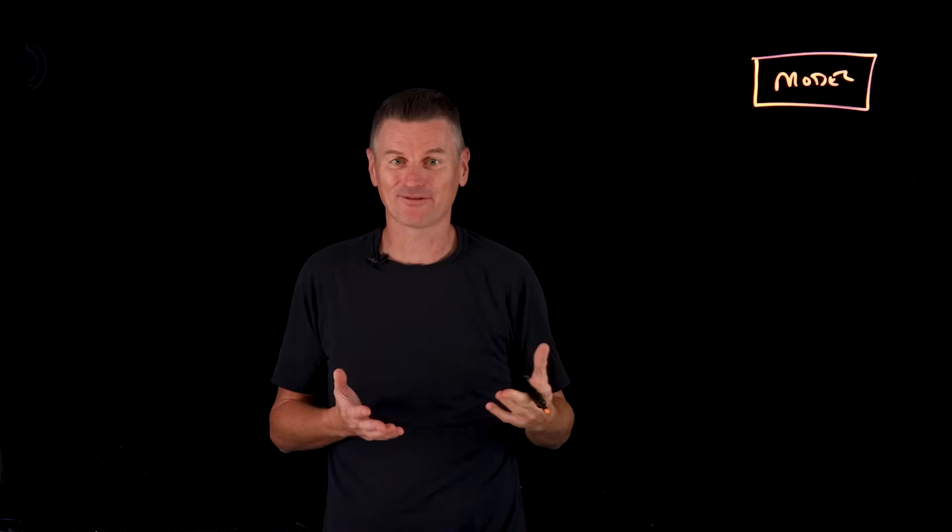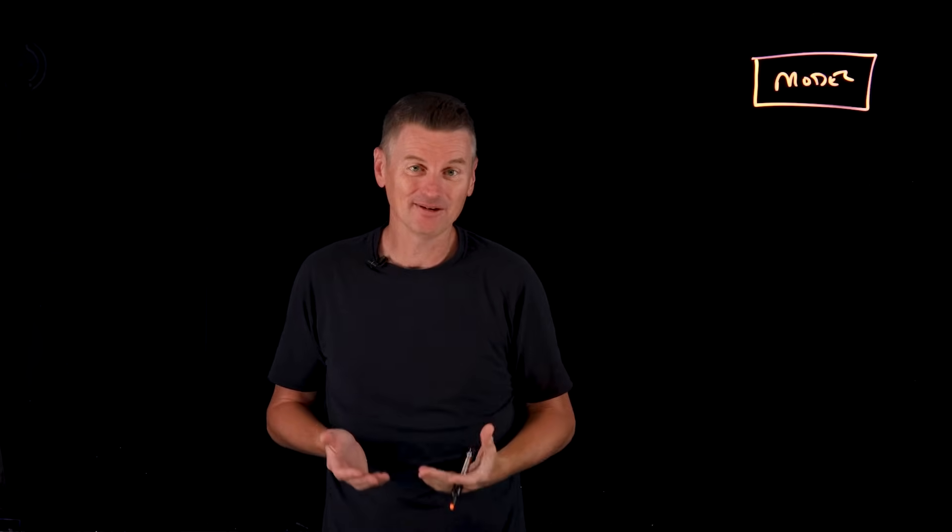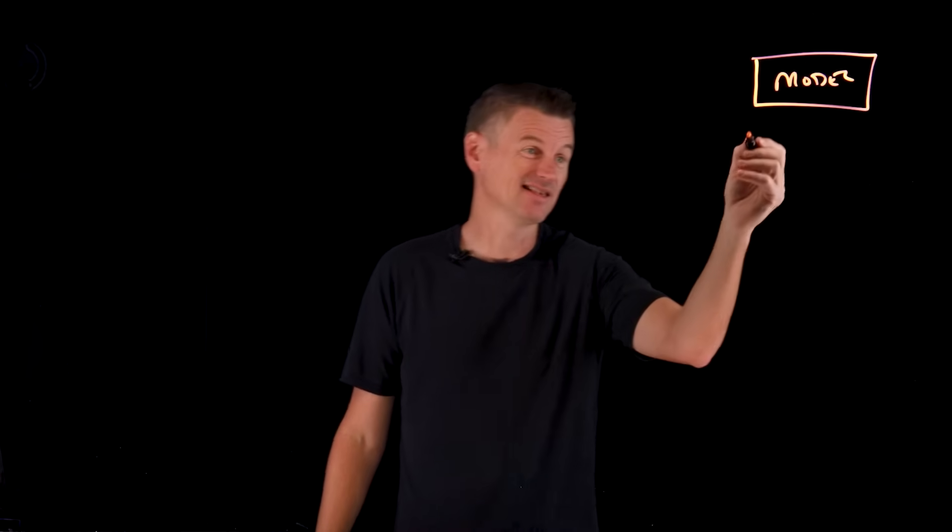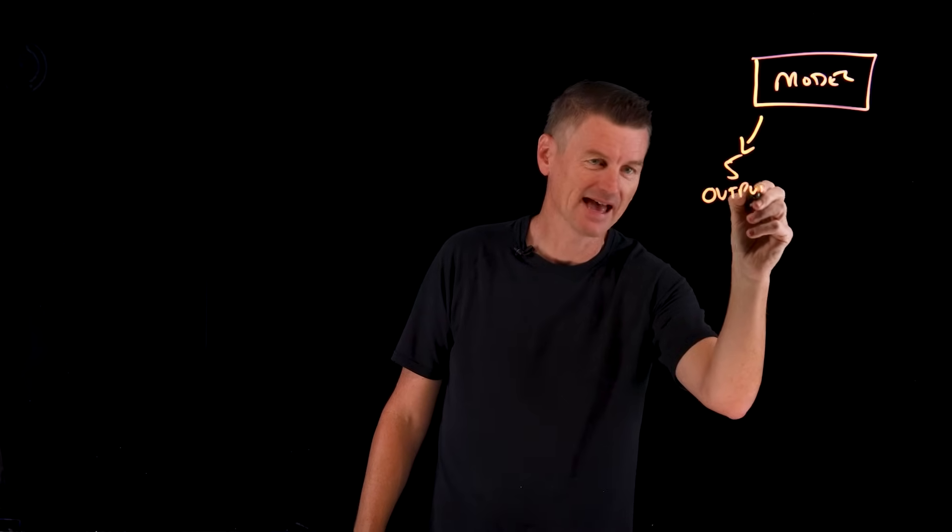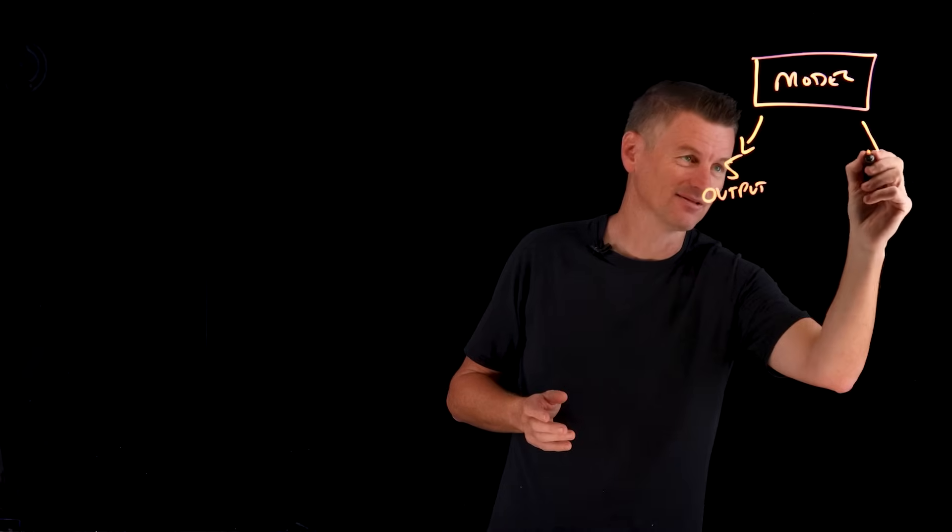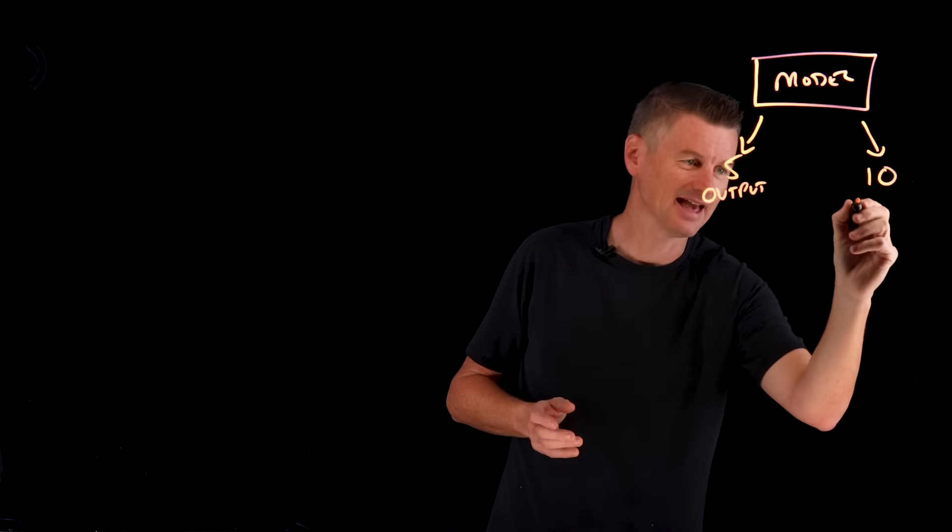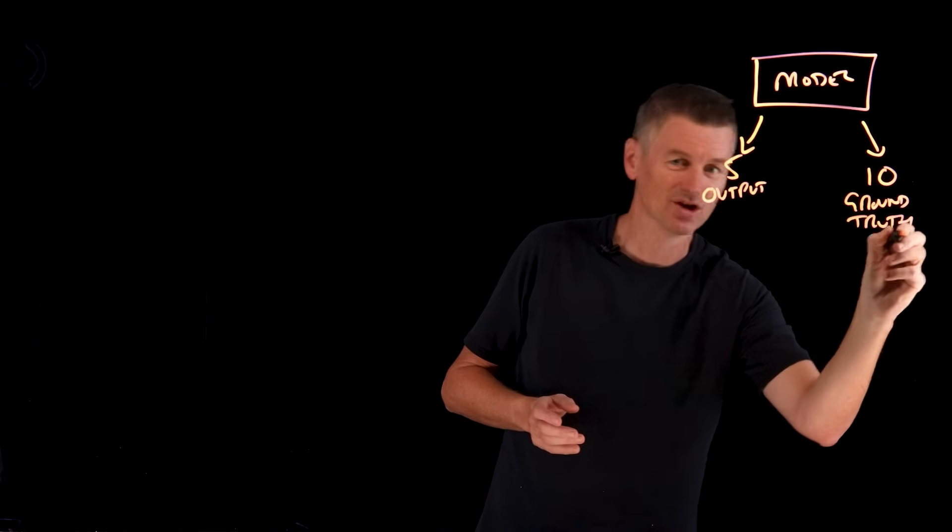It does this by quantifying the difference or the loss between a predicted value—let's say that's 5, the model gave us 5 as the output—and comparing that to the actual value. So maybe the model gave us 10, and we call that the ground truth.